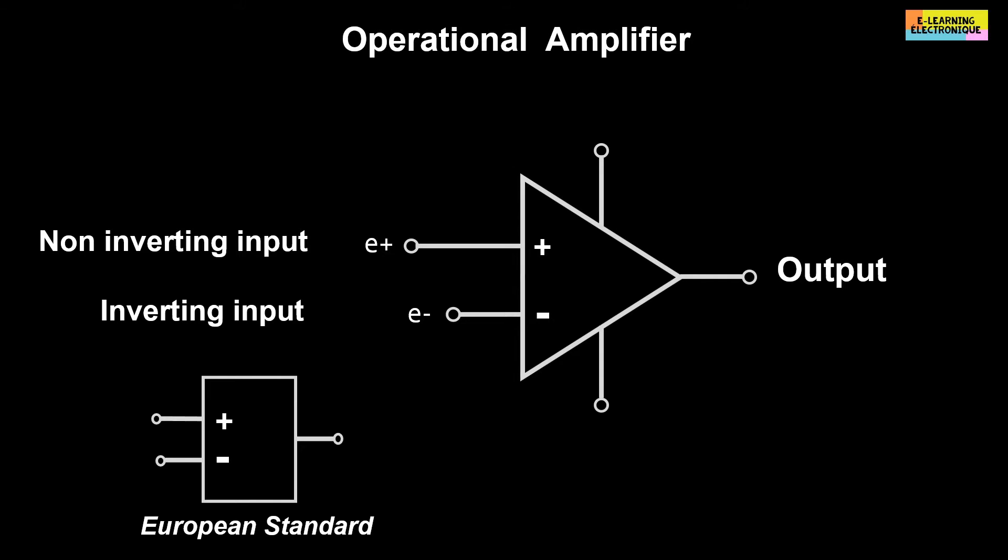The operational amplifier is an active component, which means that it requires a power supply. This supply is made with a direct current. On one side, there will be a positive power supply noted VDD, sometimes it is noted plus VCC. On the other side, it has a negative or zero supply. It is called VEE or VSS. When the voltage is zero, this is the same as connecting it to the ground.